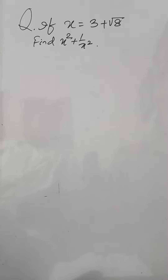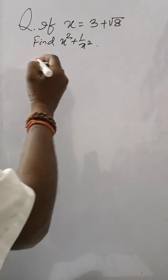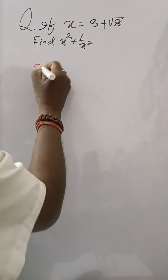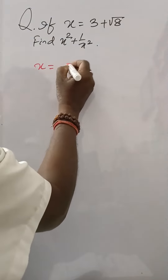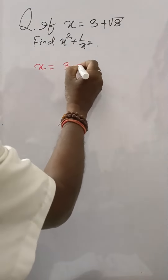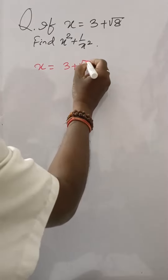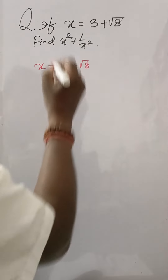If x is equal to 3 plus under root 8, find x square plus 1 by x square. Here x is equal to 3 plus under root 8.